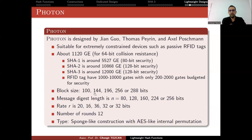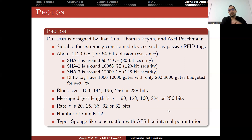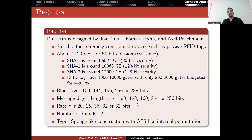The algorithm specifications are as follows. Photon supports five block sizes depending on the message digest length. The rate R is the difference between the permutation size and the capacity — it works like a sponge function, where R is the rate and the rest is the capacity of the internal state.